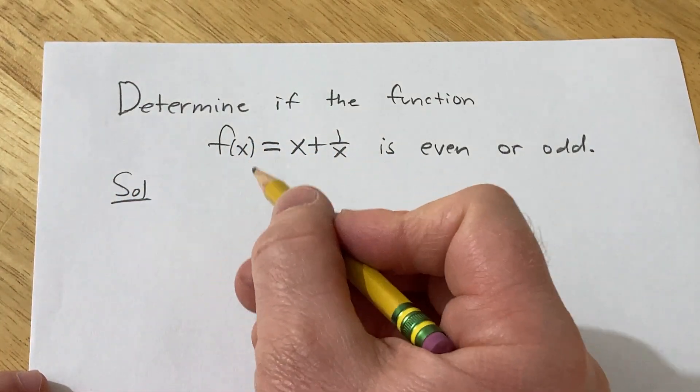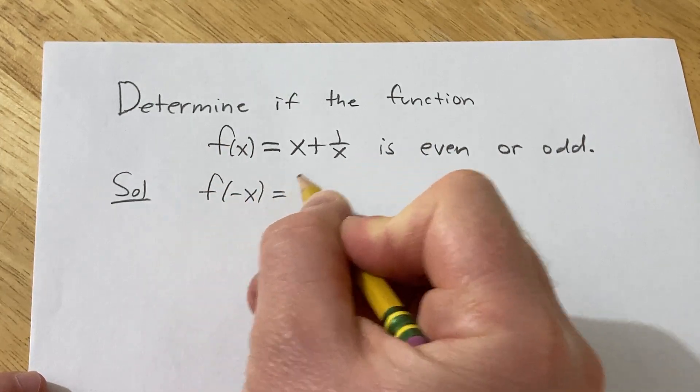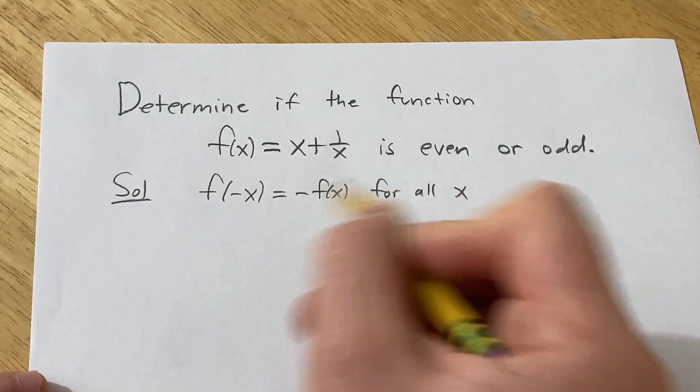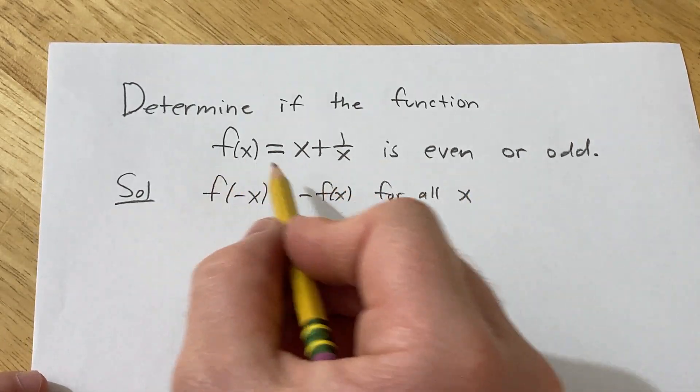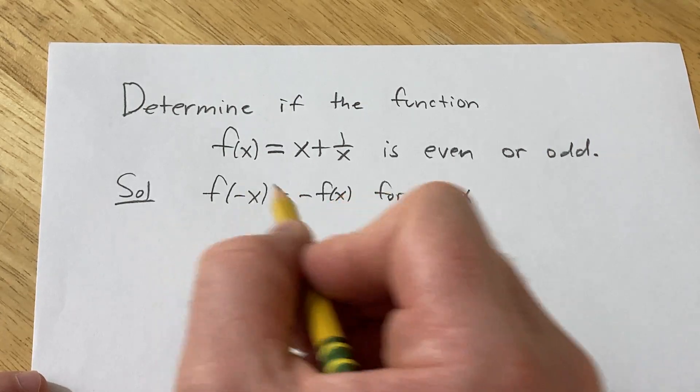Recall a function is odd if whenever you plug in minus x, you get back minus f(x), and this has to be true for all x in the domain of the function. So in this problem, to determine if it's odd, we're going to plug in negative x.